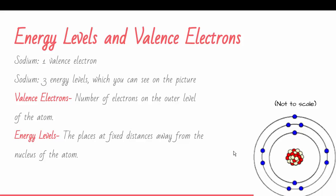Sodium has three energy levels, which are the circles in the picture. Valence electrons are the number of electrons on the outer level of the atom. Energy levels are the places at fixed distances away from the nucleus of the atom.